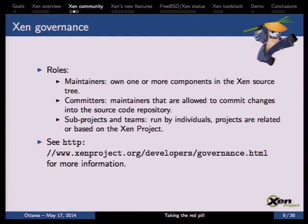The roles of the Xen project are very similar to the Linux kernel. Maintainers own one or more components inside the Xen source tree, and committers are maintainers allowed to commit changes to the Xen code repository. Sub-projects and teams are run by individuals or organizations and are either based on the Xen project or related to it. More information about governance can be found on the Xen project web page.